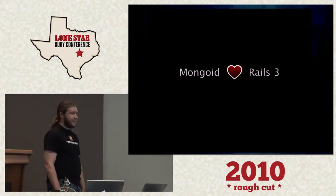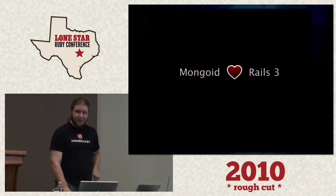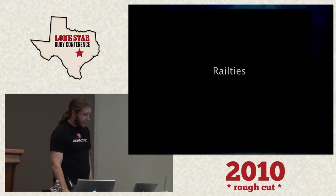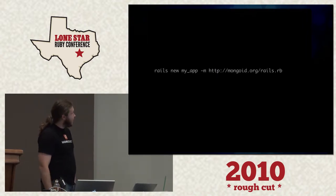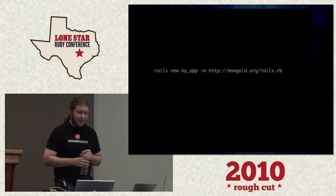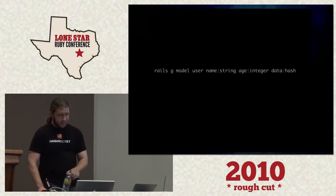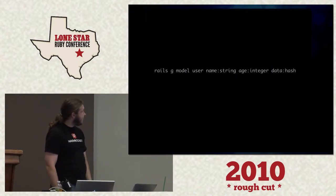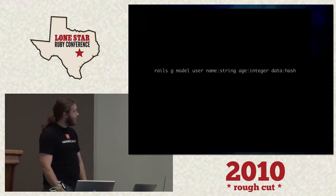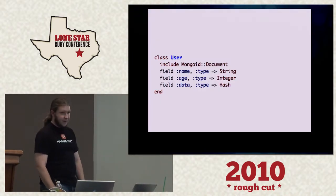We're going to talk about Rails 3. We really love Rails 3 and we've been trying to embrace it as much as possible. First thing is the railties. You can start up a new Mongoid app with `rails new`, give it your app name, dash M, pass it mongoid.org/rails.rb. That gives you a lot of different things — it gives you the generators. You can create a model just like you would with ActiveRecord, pass it the field names and types, and that will spit out the model.